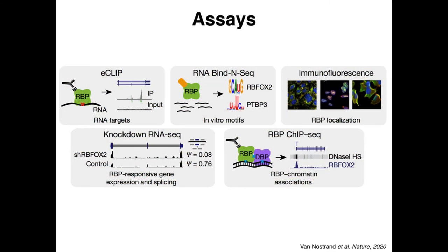We're doing this using a series of five different assays. Our main assay to study binding in vivo is eCLIP, which stands for Enhanced Crosslinking Immunoprecipitation. We use ultraviolet light to crosslink proteins to RNA in vivo, lyse the cells, purify the proteins using antibodies specific to those proteins, and sequence the bound RNAs to identify binding sites. Another binding assay is RNA Bind-and-Seq, an in vitro assay where we incubate purified recombinant protein with a pool of synthetic RNA containing all possible sequences at several different concentrations, then sequence the bound RNAs to determine relative binding affinity and derive in vitro motifs.